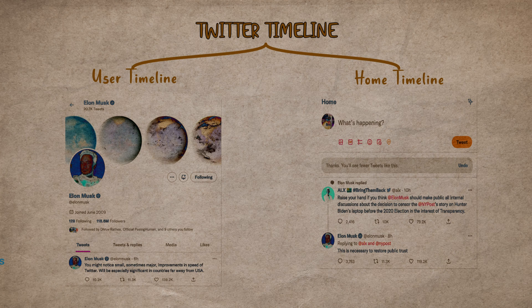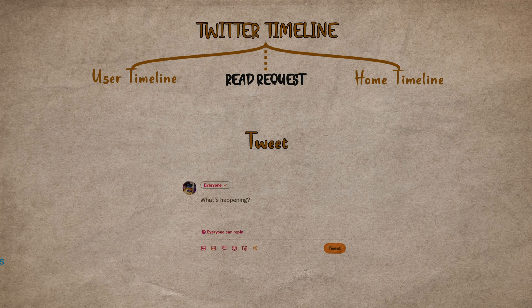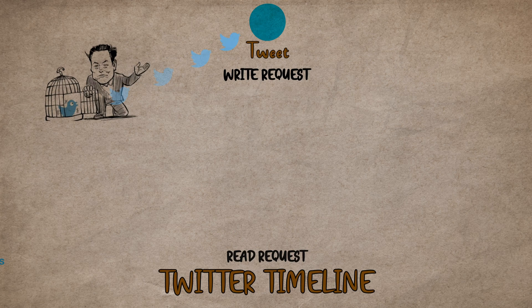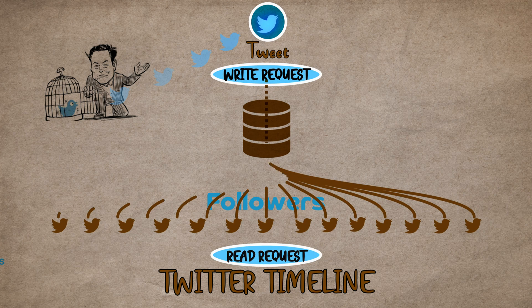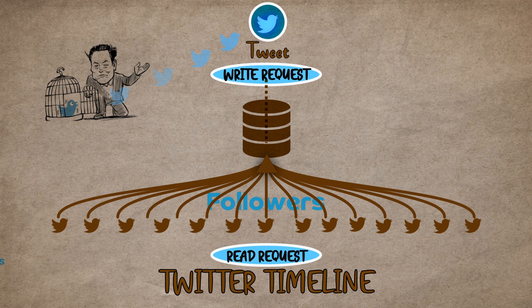Whenever a user goes to their homepage, there is a read request to fetch tweets of all the users they follow. And when the user tweets, it's a write request to the server database. The simplest approach would be to just append all the user's writes to the end of a file and read it whenever their followers go to their timeline.